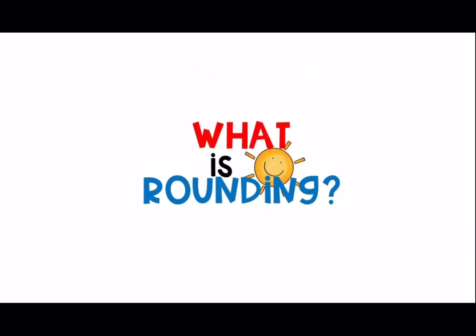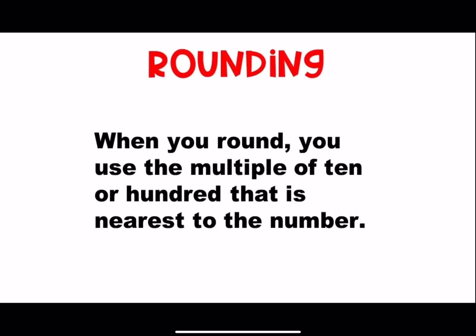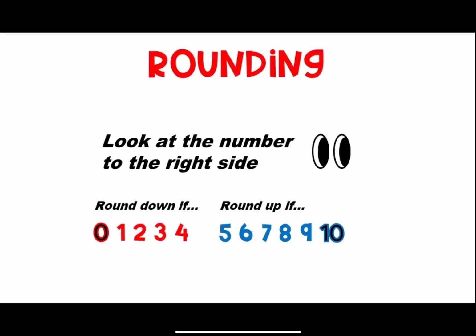What is rounding? When you round, you use the multiple of ten or hundred that is nearest to the number. When you round, you look at the number to the right side. Round down if the number is zero, one, two, three, or four. Round up if the number is five, six, seven, eight, nine, or ten.